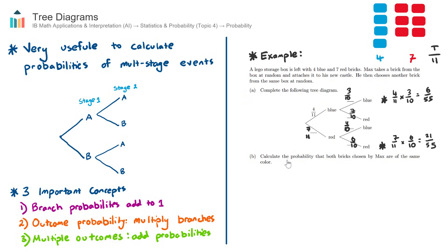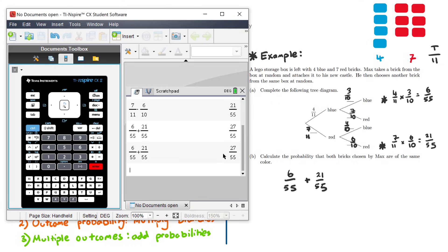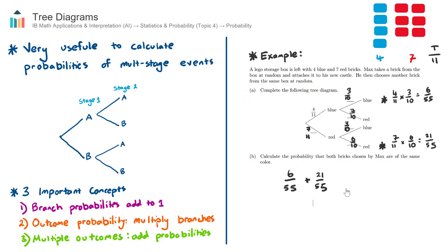When we want to find the probability of one outcome, we multiply up the branches. But we actually want to calculate the probability that both bricks are the same color, so it can be either blue-blue or red-red. When we have multiple favorable outcomes, we simply add their probabilities together. This is the third important concept. The answer to part B would be 6/55 plus 21/55, which equals 27/55, or as a decimal, 0.49.